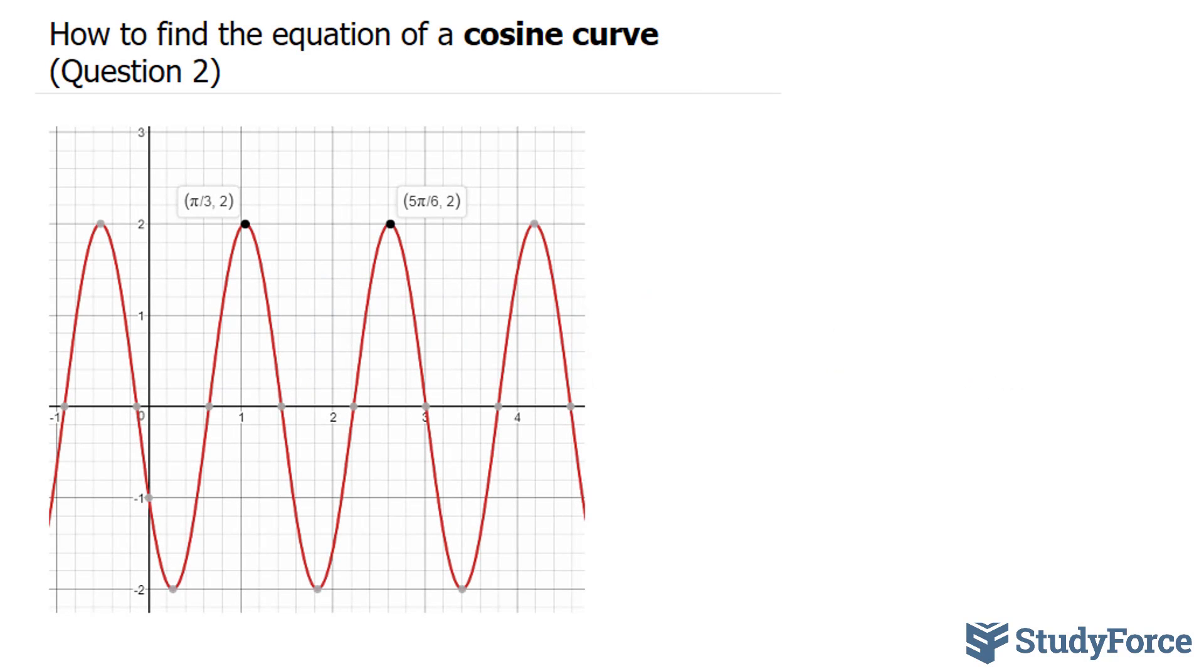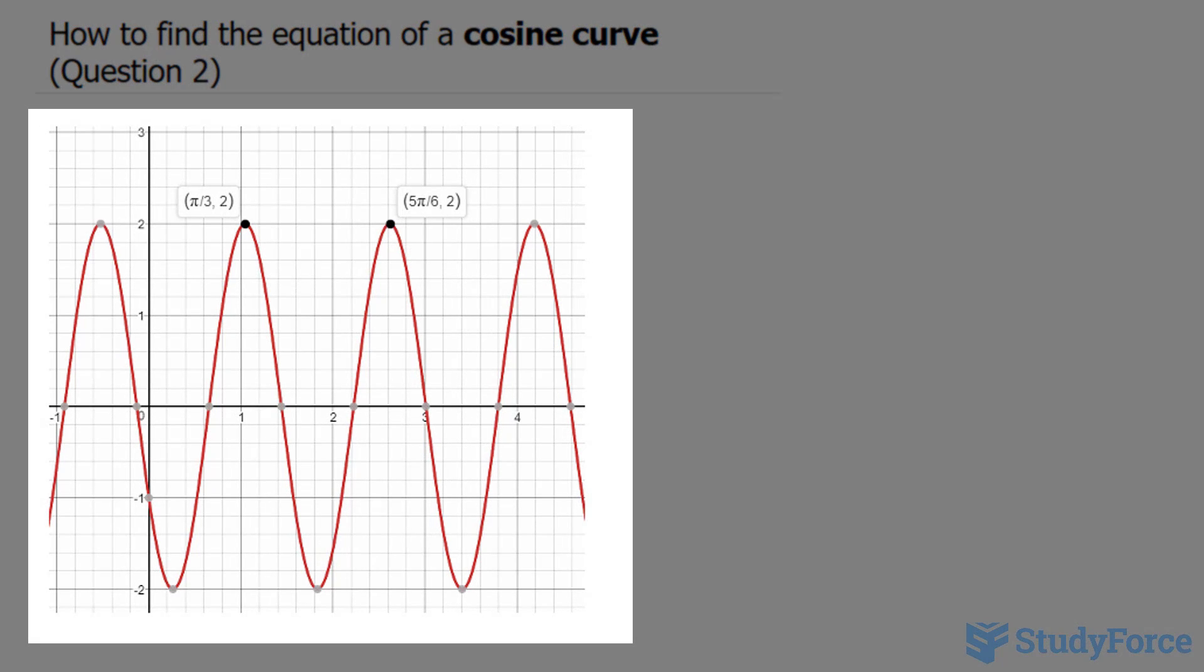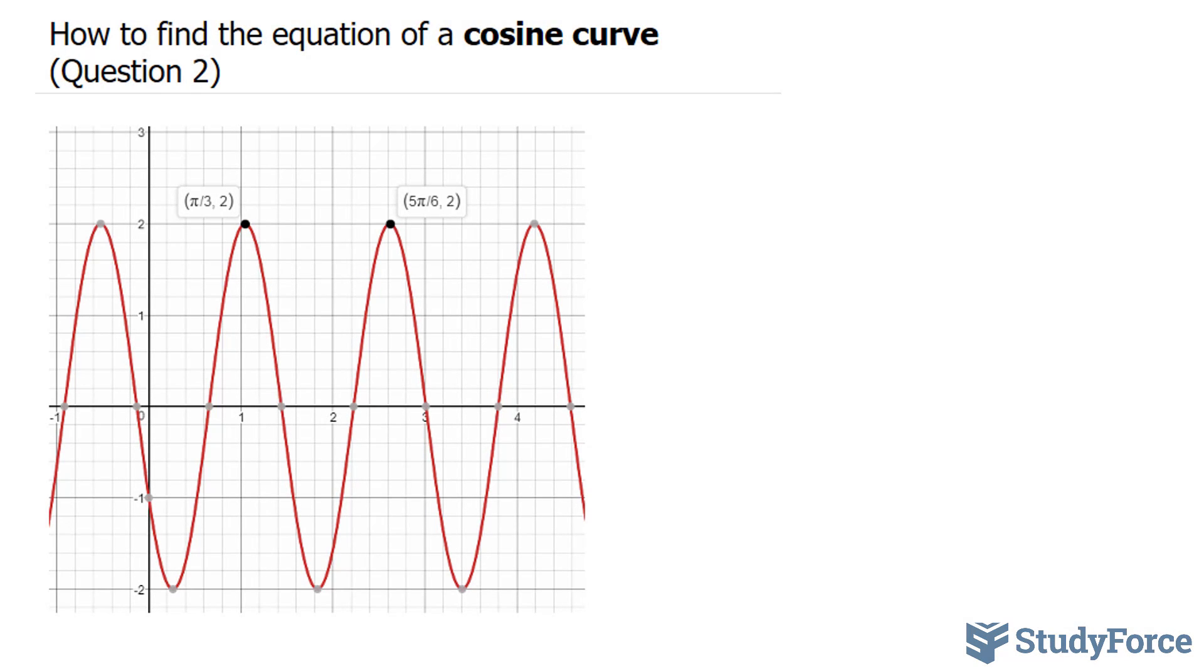In question two of this series, we're asked to find the equation of a cosine curve. This is a cosine curve, and what we have to do is represent this curve in the format y equals a cosine bx plus c, where a represents the amplitude, b represents the cycle, and c relates the phase shift.